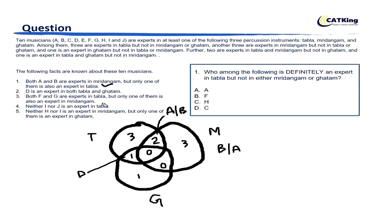Both F and G are experts in Tabla, but only one of them is also an expert in Mridangam. Similar to the A-B case: if F is in Tabla-Mridangam, G is in Tabla only, or if F is in Tabla only, G is in Tabla-Mridangam.